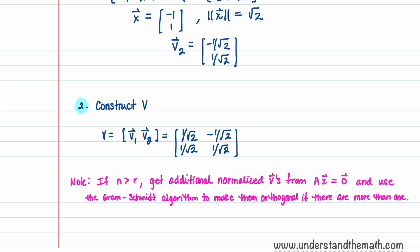Note: if n is greater than r, you will need additional normalized eigenvectors from A·x = 0, and if there's more than one, you'll need to use the Gram-Schmidt algorithm to make them orthogonal.